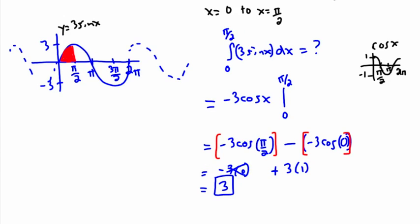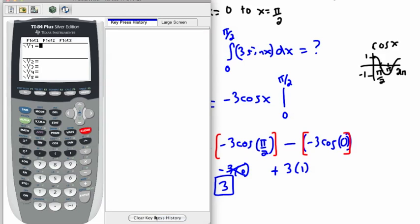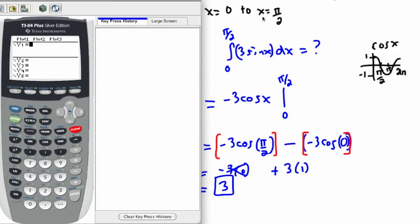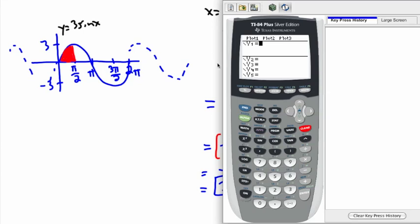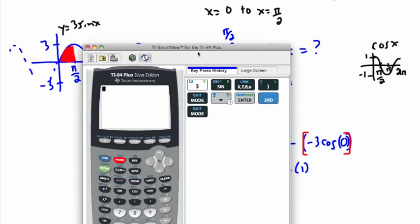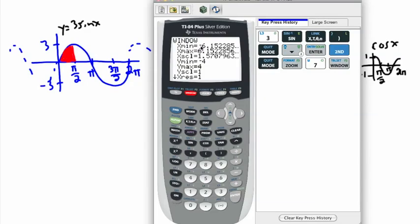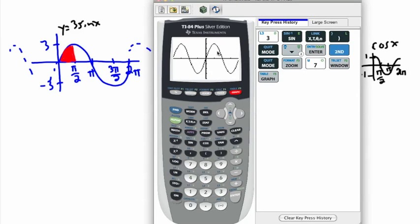Let's check that with the calculator. I'll go back to y equals, clear that, and clear the history. I want to graph the original function, which is 3 sine x. Before I do this it's important to change my mode — I press mode, go down to radians, press enter. The reason is I want to do my graph using values with pi, so I need to be in radian mode. I'll do zoom trig, which gives me a nice trigonometric zoom.